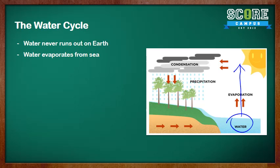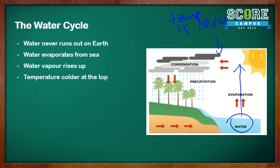Higher up, the temperature is colder. The temperature is colder at the top and because of that, the water vapor condenses to form droplets of water.